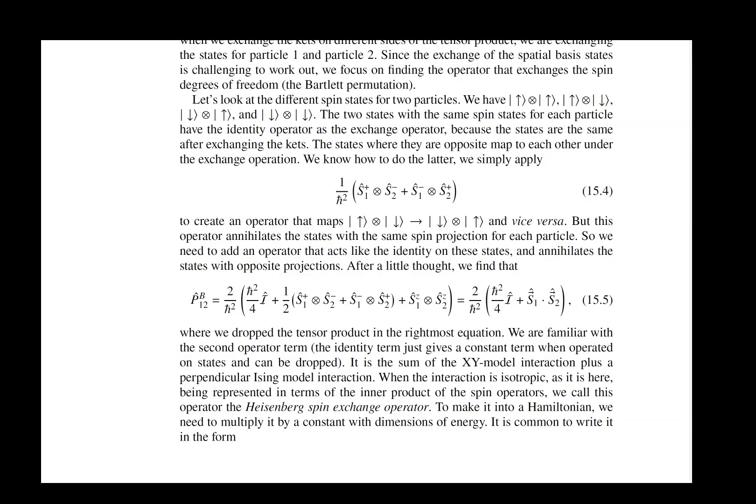You can see in this equation 15.5 that it has a term that's proportional to the identity operator. That term is not so important because it doesn't really do anything to the states. And then there's a term that's proportional to the dot product of two spin operators, S1 dot S2. And that's in essence the heart of what the Heisenberg exchange model is.